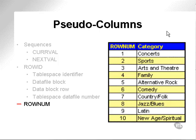The ROWNUM pseudo-column simply outputs a number, or a sequence number, in sequence, of each row as it's retrieved from a SELECT statement.